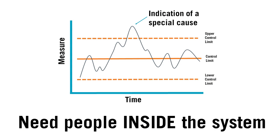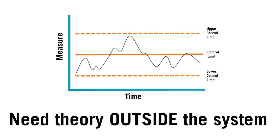The answer requires very different people and approaches. If it's a special cause problem, you need people inside the system who can quickly identify those special causes and get the system back to normal. If it's a common cause problem, you need theory from outside the system to identify fundamental changes and new ideas. In healthcare, we often assume all problems are common causes and that we just need a new system.